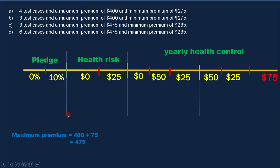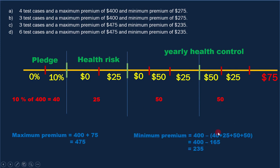Now let's calculate the minimum possible premium. First, we need to find 10% of $400, which is $40. The health risk form gives a maximum reduction of $25, so we consider $25. The BMI discount gives a maximum of $50, so we consider $50. And the non-smoker discount is also $50. Now subtract all these values from $400: $400 minus $40, minus $25, minus $50, minus $50 gives $235. So the minimum premium is $235. The conclusion is: we need 3 test cases, the maximum premium is $475, and the minimum premium is $235. That means option 3 is the correct answer.